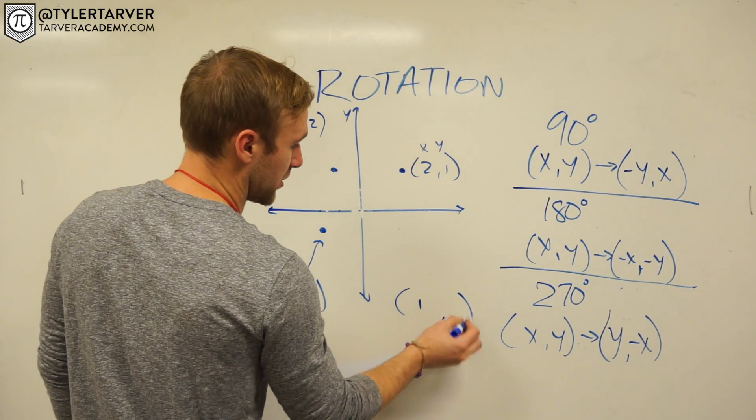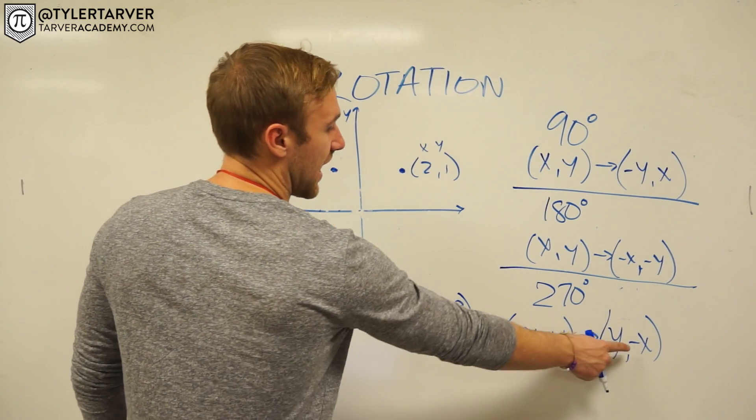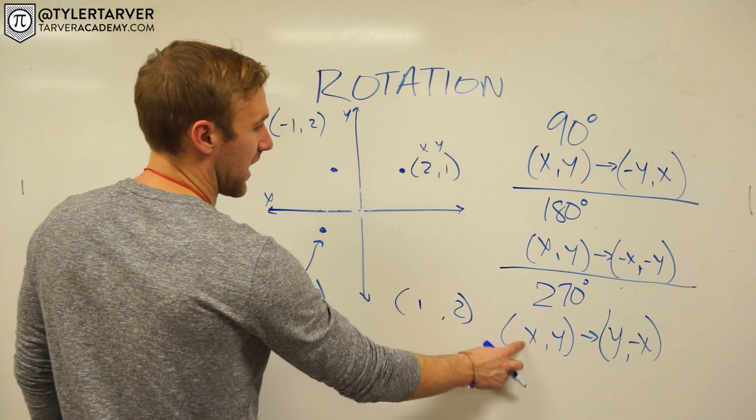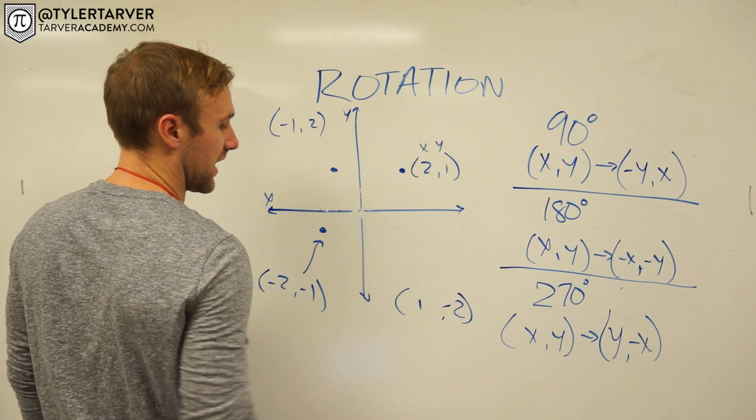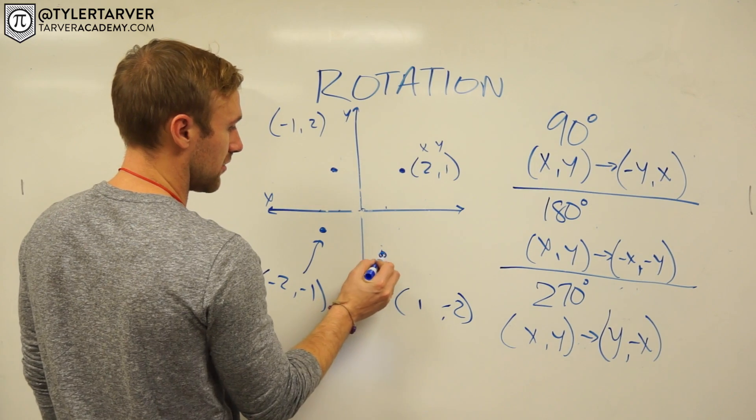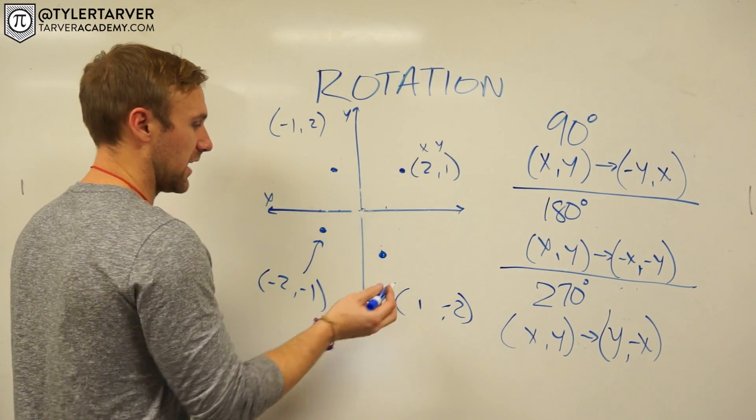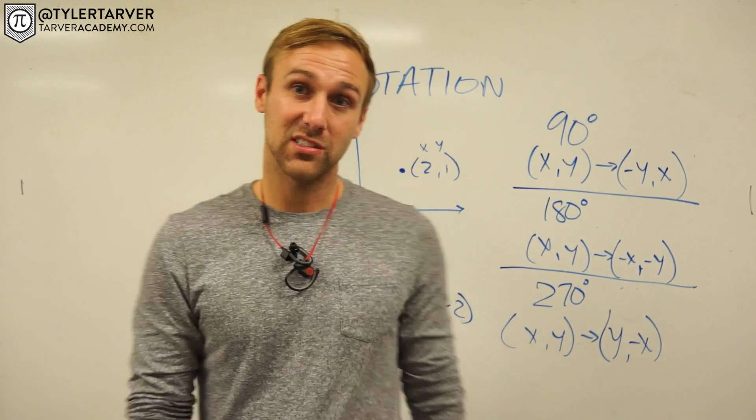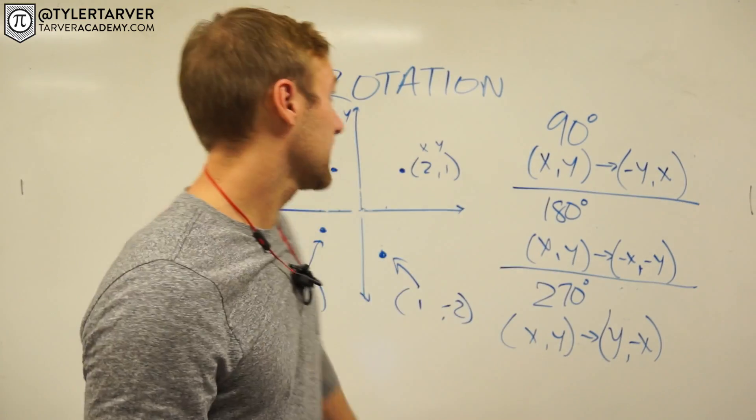And then I make the x an opposite, so I'll make that one that was originally my x opposite, which would be negative 2. So I go 1, negative 2. I need a number line, but I don't have one, so work with what we got. So that's how you do rotations.